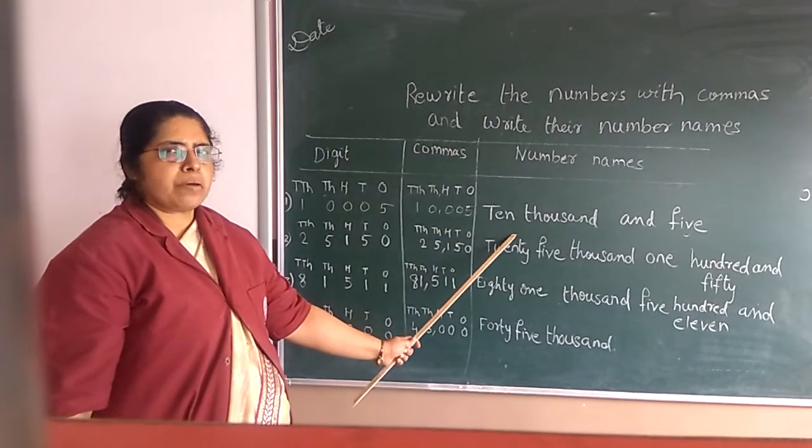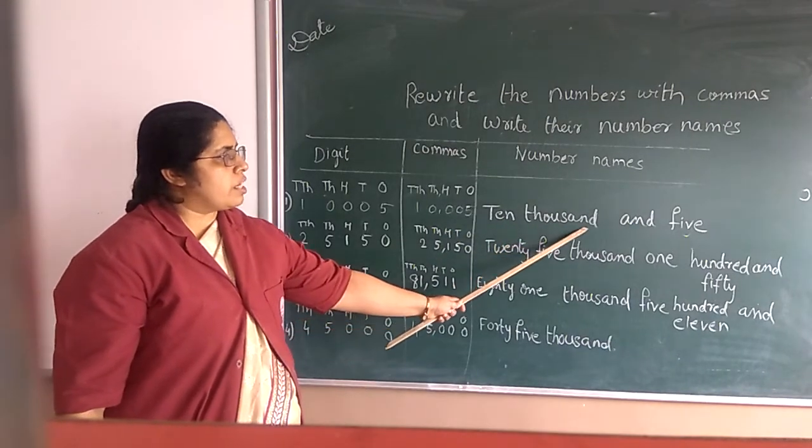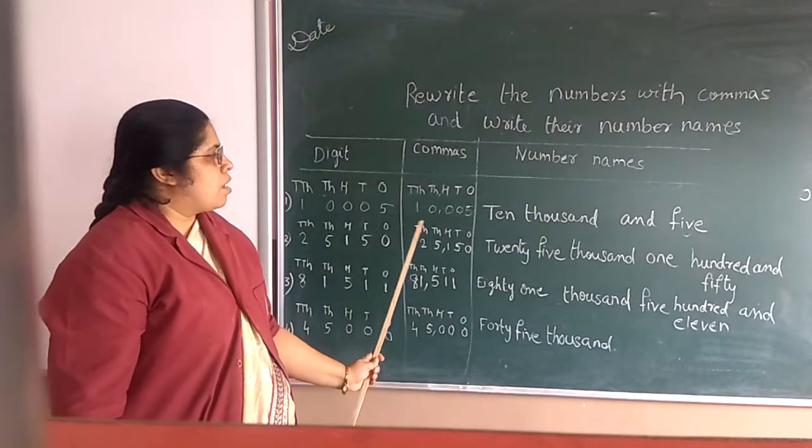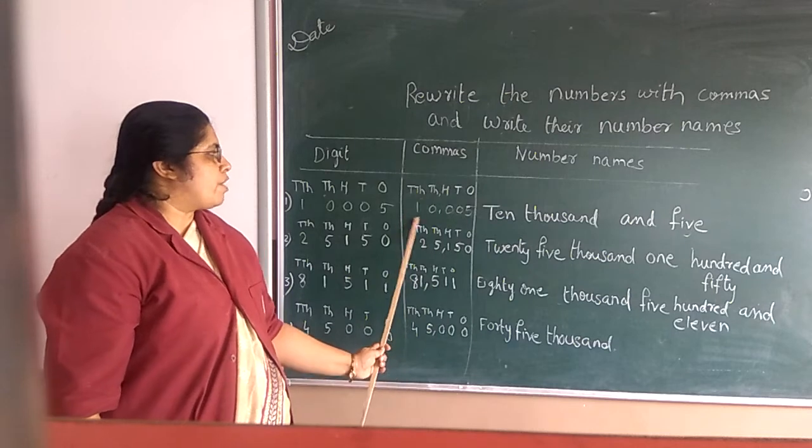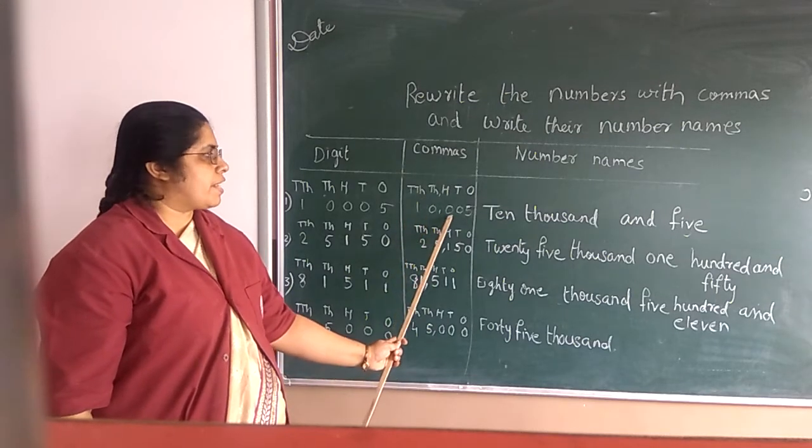And how you will write the number name? 10,000 and 5. And where you will put the comma? After 10.